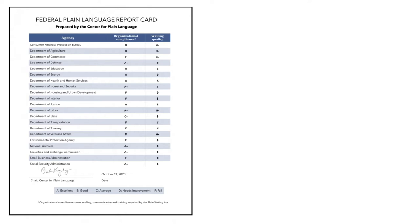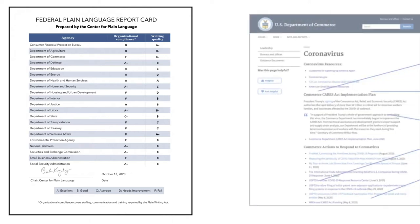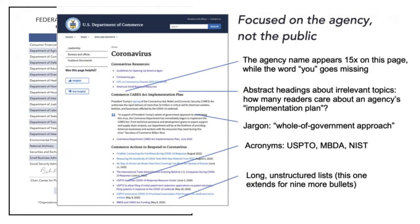The Plain Writing Act of 2010 finally made it the law that the U.S. government is required to communicate with us in plain language. Since then, the Center for Plain Language has been asking writing experts to evaluate how well federal agencies comply with the law each year. Here's their 2020 federal report card, which focused on coronavirus information. The Center provides an assessment of the pages they review, like this one from the Department of Commerce, where the judge noted several items that made their page an example of what not to do to achieve plain language. For example, the agency name appeared 15 times on the page while the word 'you' never appeared.